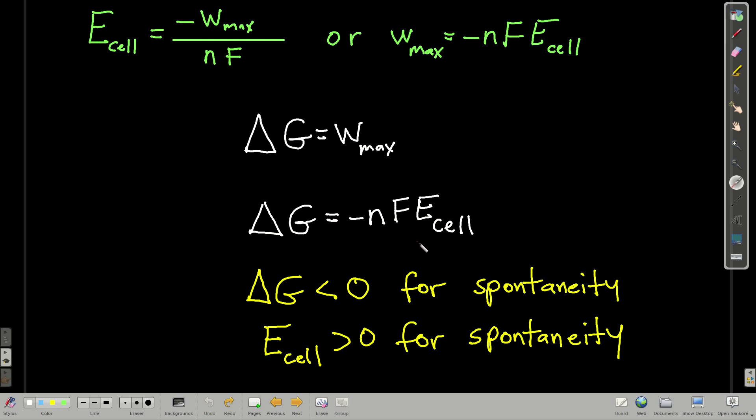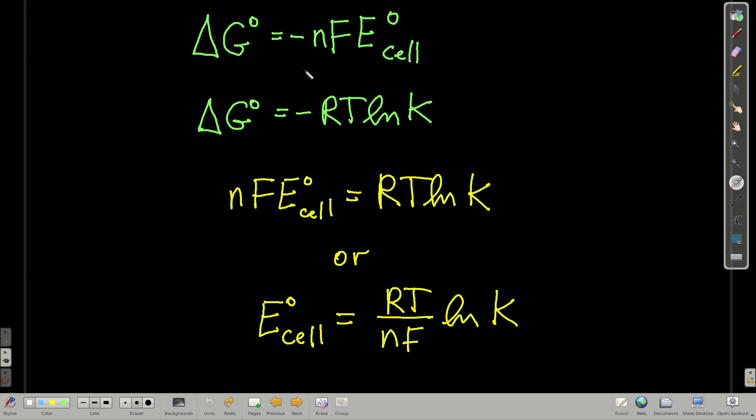Now, let's look at spontaneity. We know that for a process to be spontaneous, delta G must be negative. Because of this negative sign here, that means E must be positive for spontaneity. Now, if delta G is equal to negative nFE of the cell, then delta G zero is equal to negative nFE zero of the cell. Standard conditions here, again, mean 25 Celsius. One molar is the concentration of any solute in the solution for standard conditions.